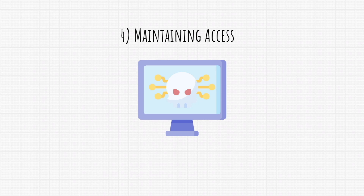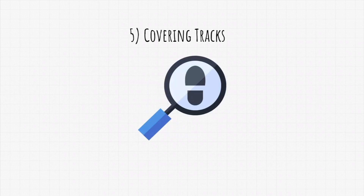The last step of a penetration test is covering tracks — simply removing all evidence that an attack ever took place. This can involve deleting or hiding files, editing logs, or basically reverting any changes you made to the system while the attack took place.